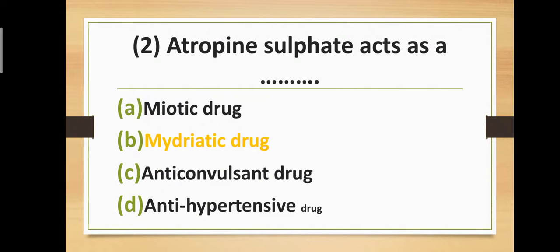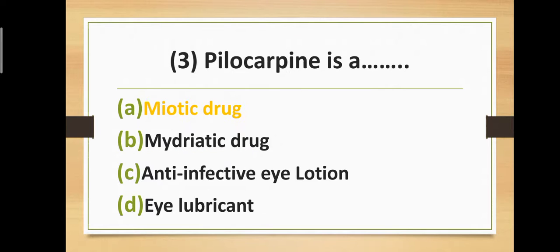Question two: Atropine sulfate acts as which type of drug? Option A: Miotic drug. Option B: Mydriatic drug. Option C: Anticonvulsant drug. Option D: Antihypertensive drug. Correct answer is Option B — Mydriatic drug. Atropine sulfate acts as a mydriatic drug.